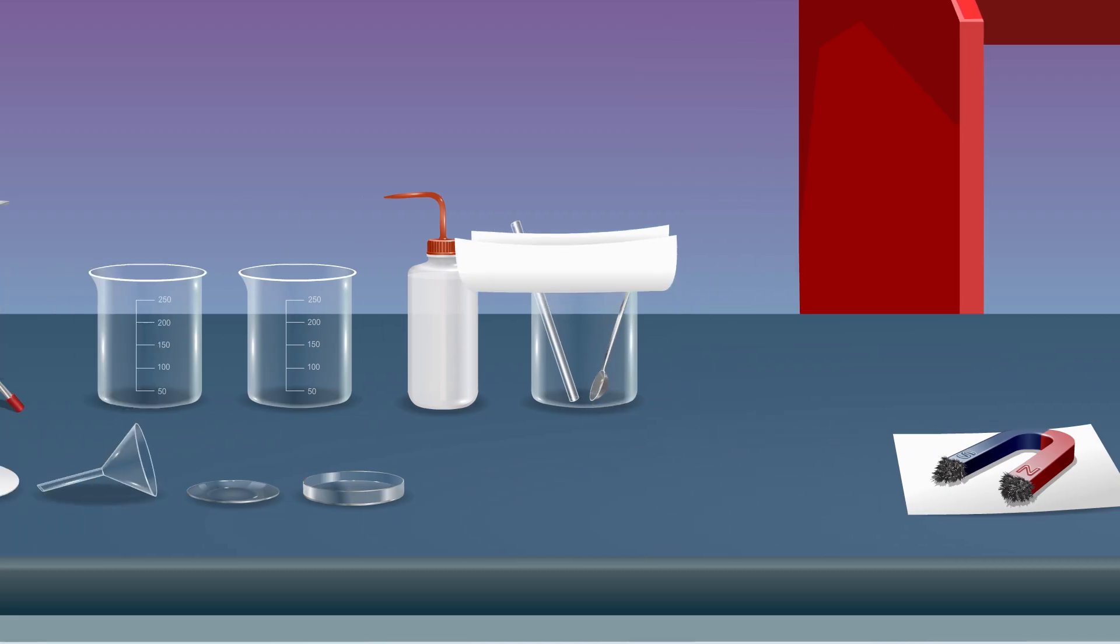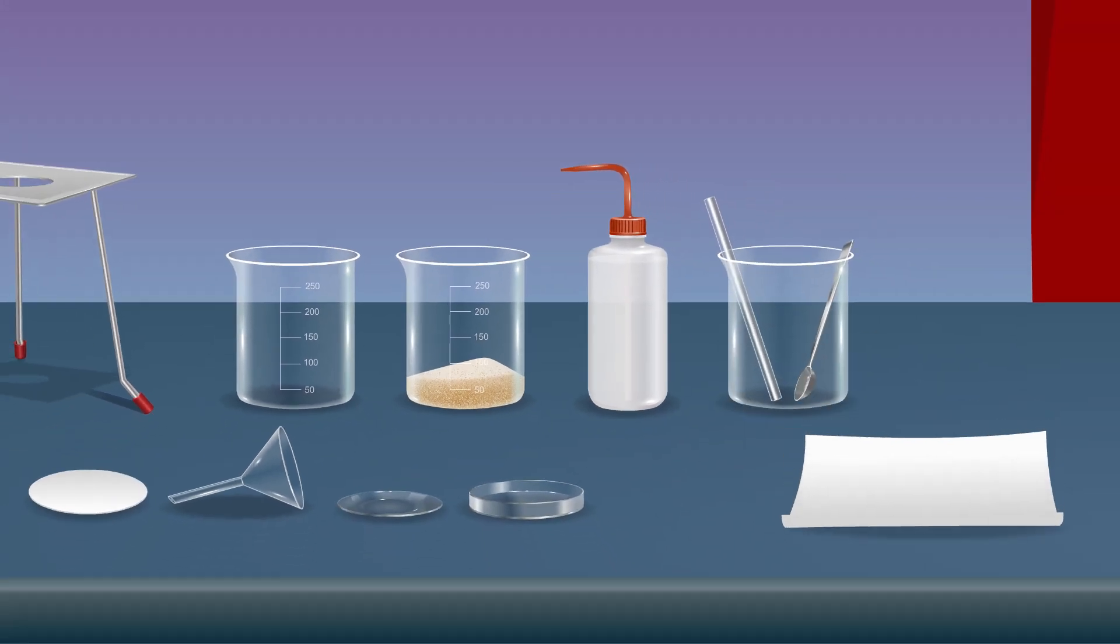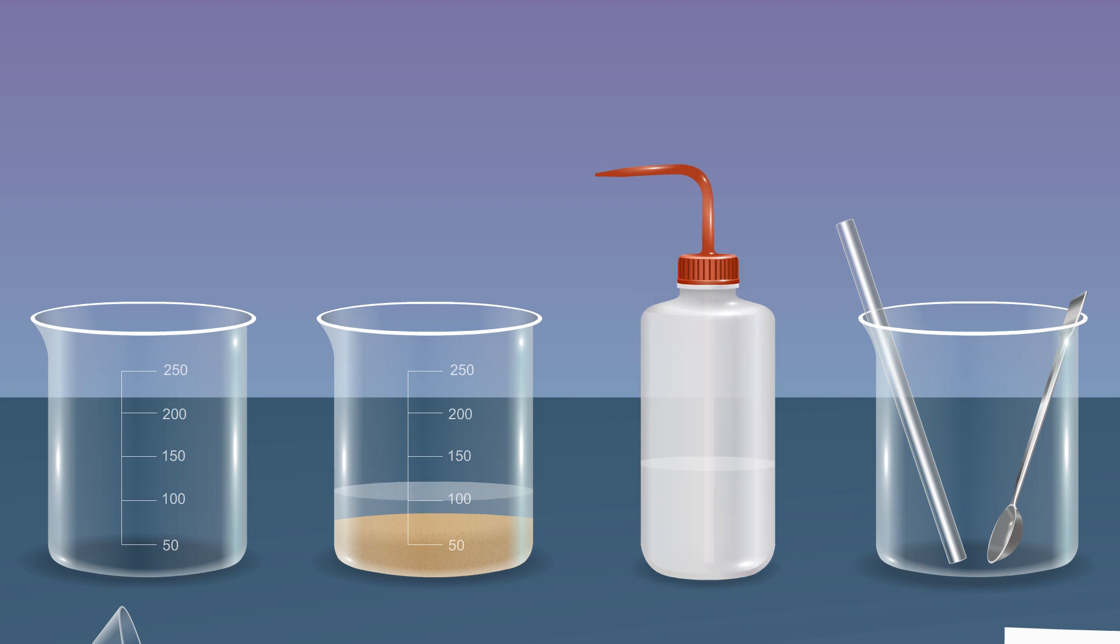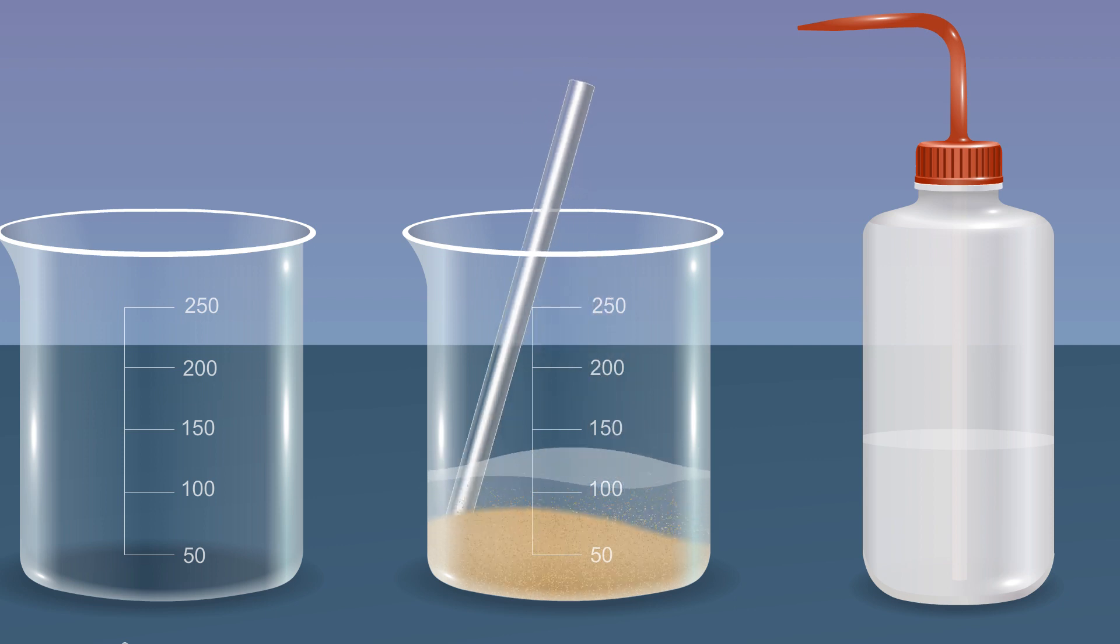Fill a beaker with the residual mixture after the iron filings have been removed. Add a sufficient amount of water using a wash bottle to cover the mixture. Stir the contents of the beaker with a glass rod for some time.